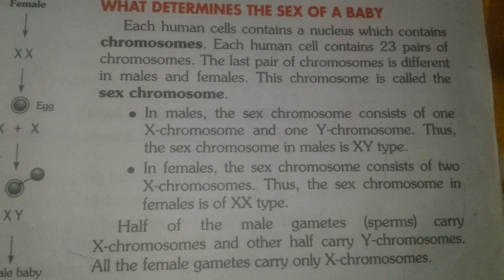As we all know, the total number of chromosomes in humans is 46, which is the diploid form. When we look at the haploid form, it is 23 pairs.